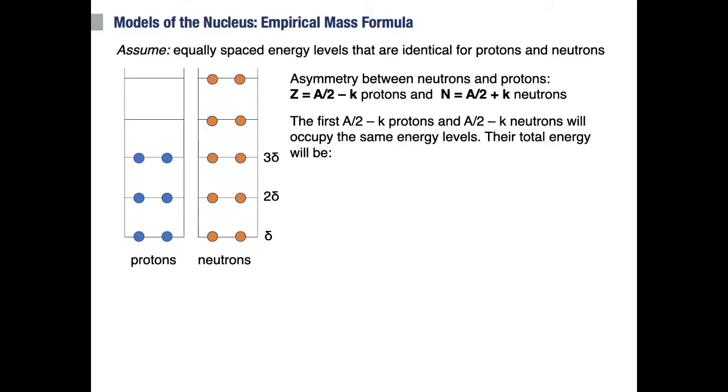Let's also consider an asymmetry between neutrons and protons. For the sake of argument, let's say that there are A/2 minus k protons and A/2 plus k neutrons, where k is an integer. So if this is equal to zero, then one has the same number of neutrons and protons.